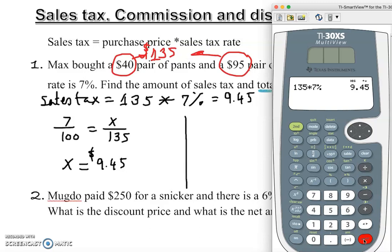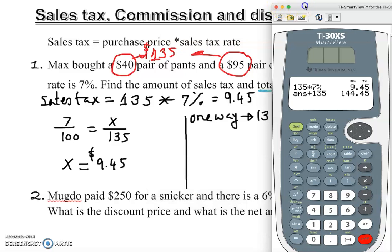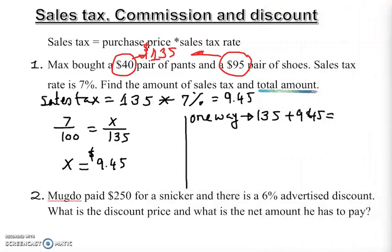The first way — plain arithmetic — you add $9.45 directly to $135. So 135 plus $9.45 gives you $144.45. That's one way to find the total.